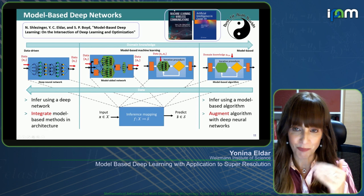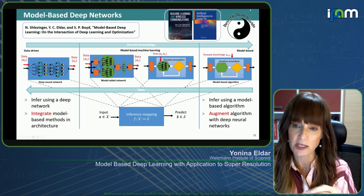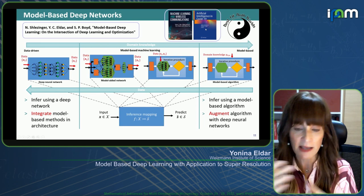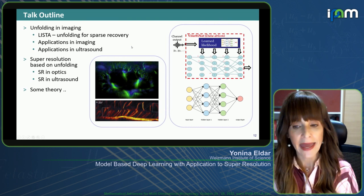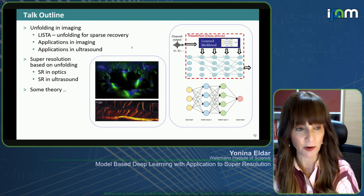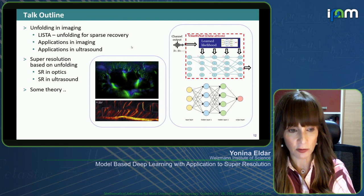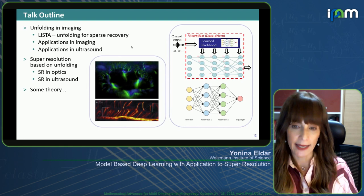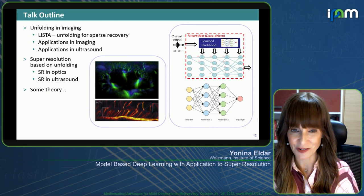We have a recent review paper describing these approaches, along with two recent books — one on machine learning and wireless focusing on communication applications, and the other on AI for COVID-19 focusing on medical applications. In the rest of the talk, we'll mainly focus on unfolding, which is what we used for super resolution — covering unfolding for general sparse recovery, general imaging and ultrasound applications, specific super resolution applications in optics and ultrasound, and some theoretical results at the end.